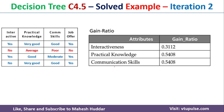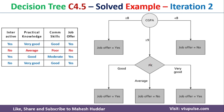Practical knowledge and communication skill both have the same maximum gain ratio of 0.5408, so either can be selected. We select practical knowledge. It has three values: very good, good, and average. For 'good,' there is one example of type yes — leaf node = Yes. For 'average,' the label is no — leaf node = No. For 'very good,' both examples are yes — leaf node = Yes. All branches now have leaf nodes, so the tree is complete.